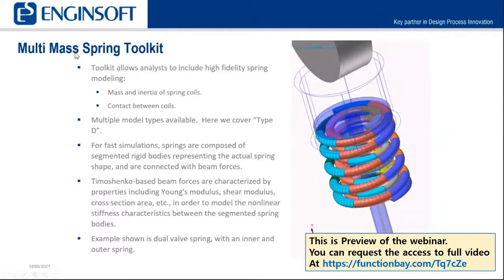If we want to include that level of fidelity, or close to it, but also have faster simulations, we can use the multi-mass spring toolkit in Recurdyne.